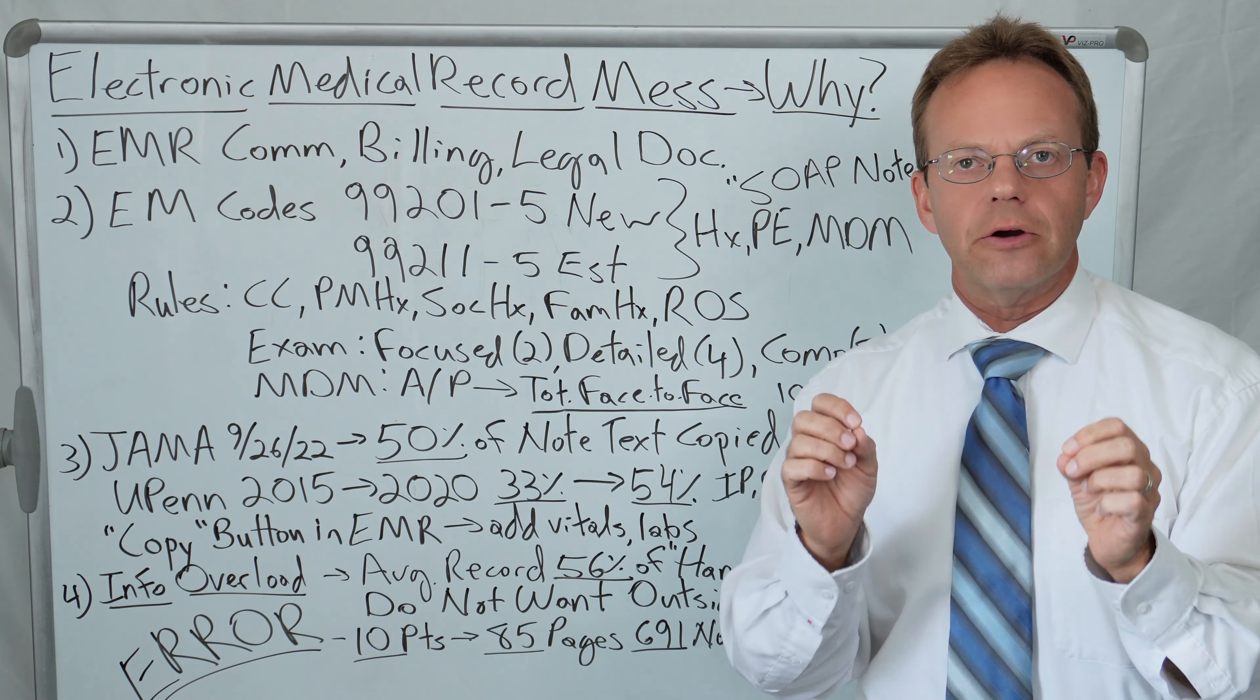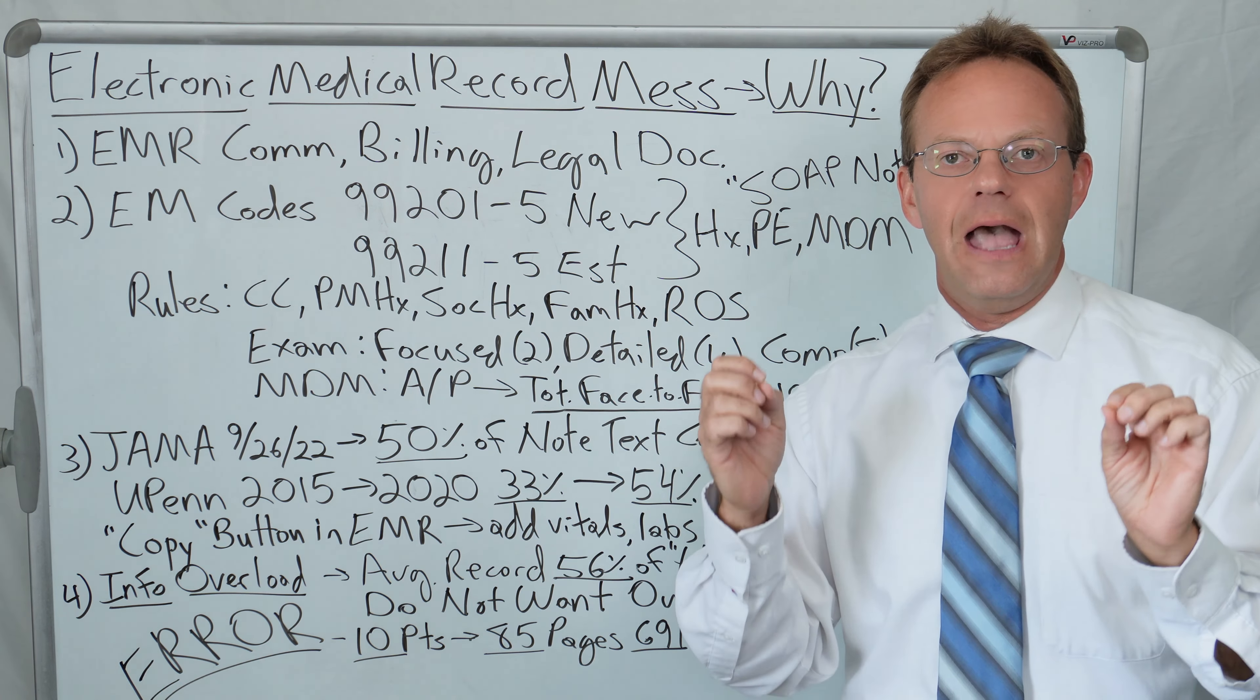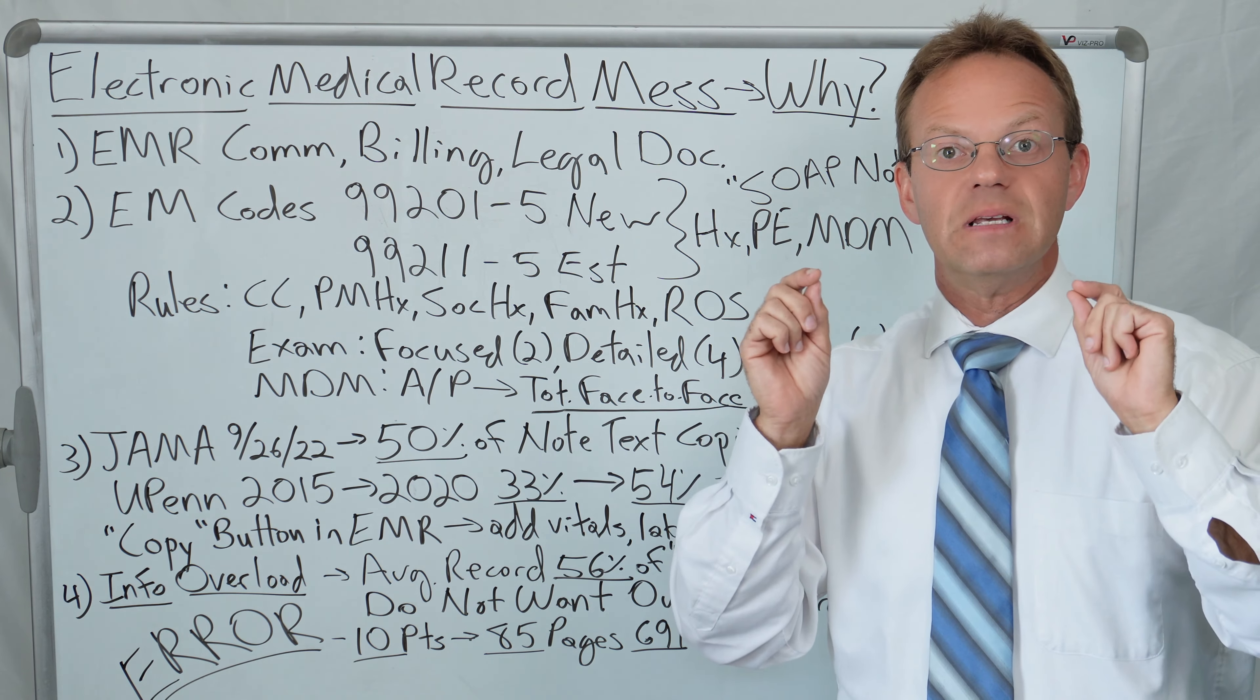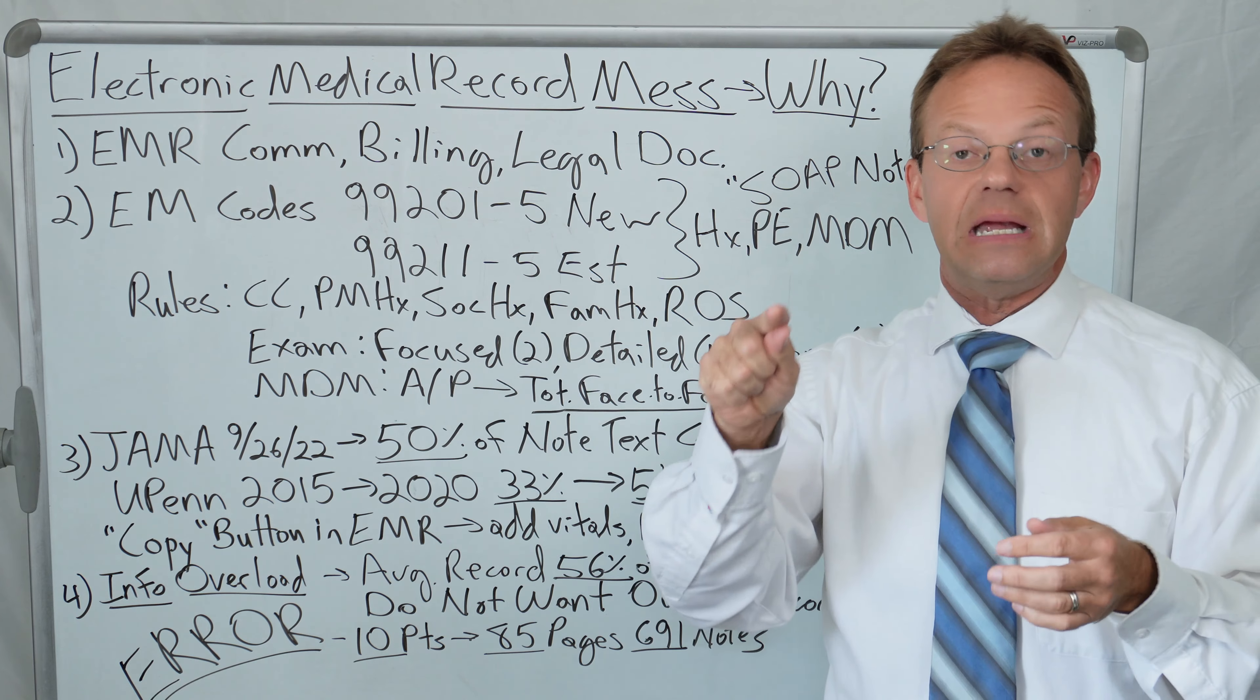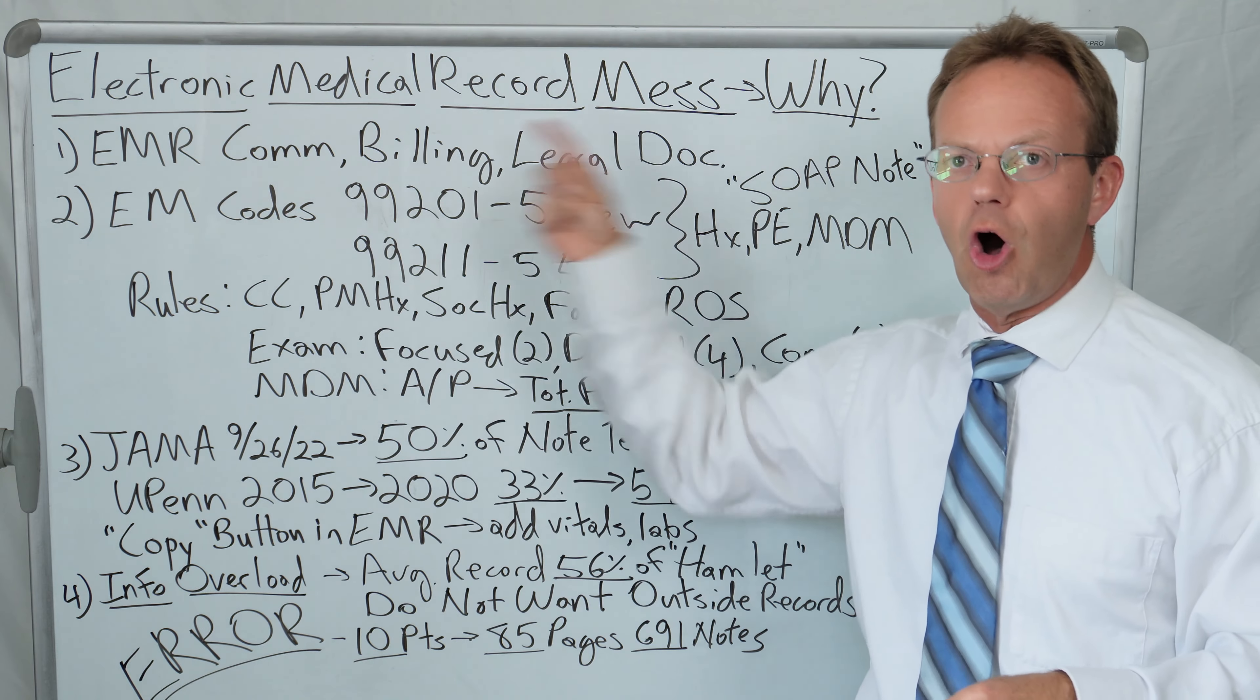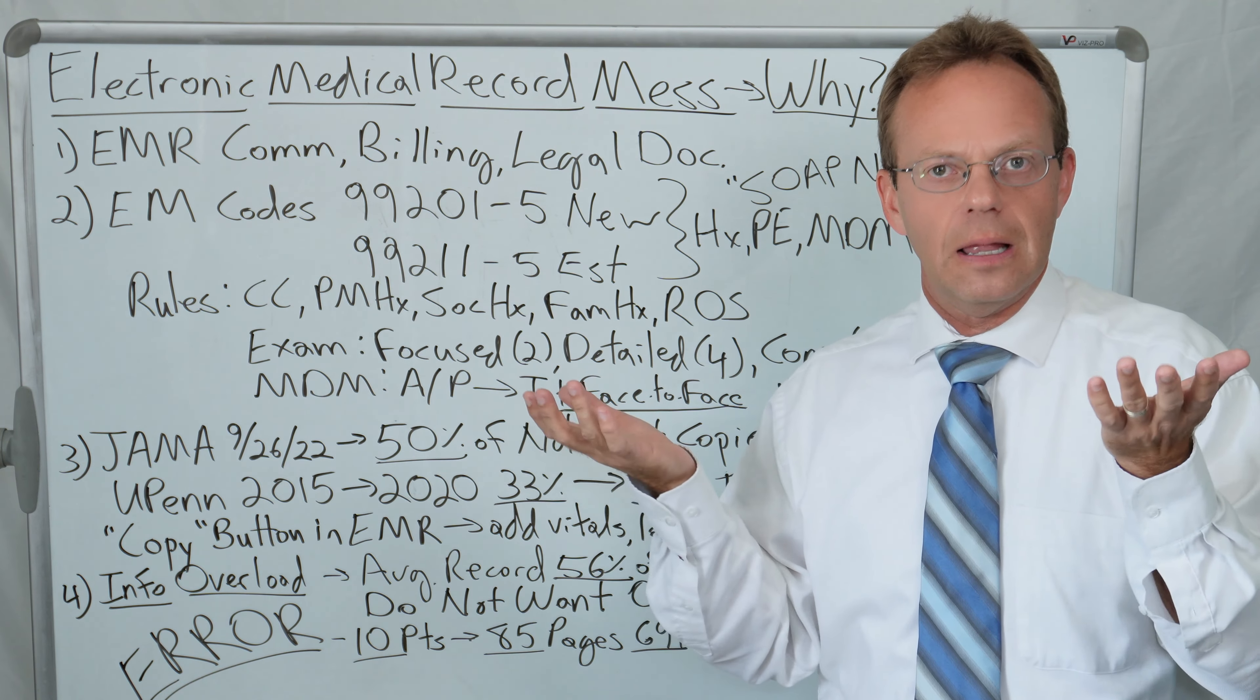The electronic medical record allows what word processing allows to do for everyone else in the world, which doctors didn't have before the electronic medical record. And it is what is referred to as the copy button and the paste button. What do doctors do with all of these documentation requirements? They copy a previous note either from themselves or they copy another doctor's note, and they paste it into their own note so that they don't have to rewrite all of this stuff that is required for billing. Notes are filled with copying and pasting.